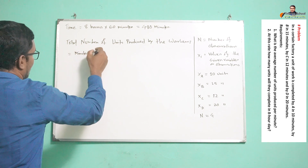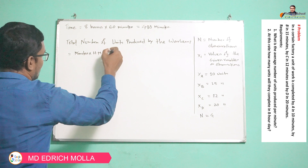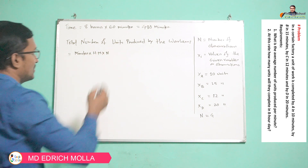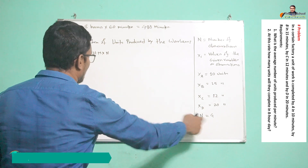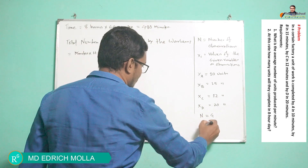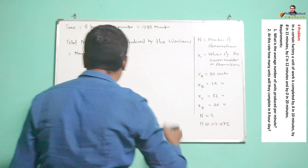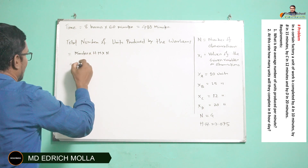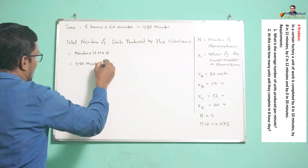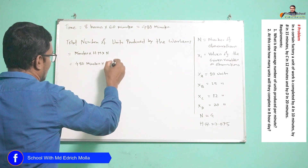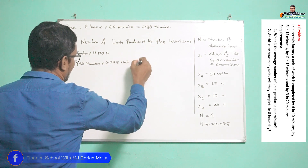The formula for total units is: minutes multiplied by harmonic mean multiplied by n (number of workers). Minutes = 480, number of workers n = 4, and the harmonic mean HM = 0.075. So the expression becomes 480 minutes multiplied by 0.075 units per minute multiplied by 4 workers.